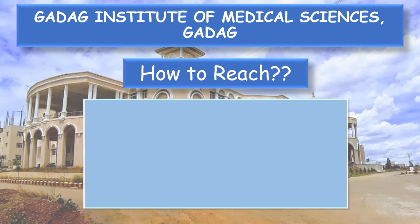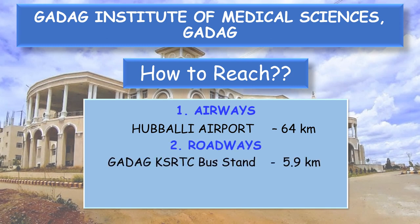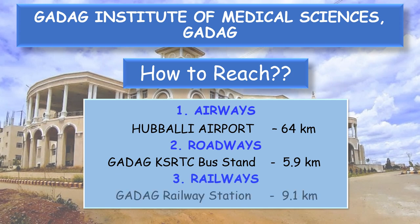How to reach the college? If you are an All India Quota student or coming from far away, Hubli Airport is the nearby airport, which is 64 km from the college. By road, Gadag KSRTC bus stand is 5.9 km, and another route via Gadag KSRTC bus stand is 9.1 km.